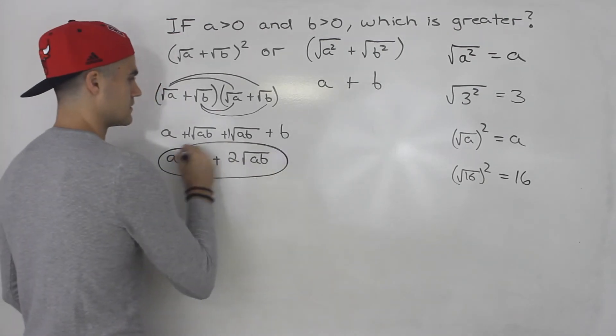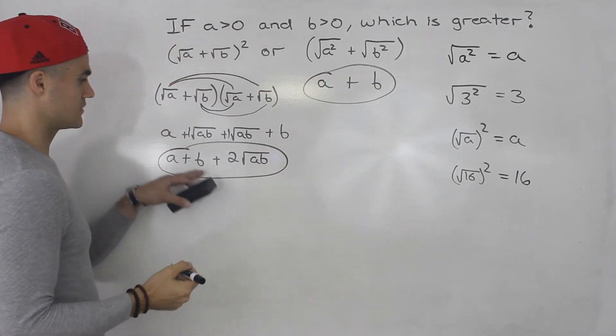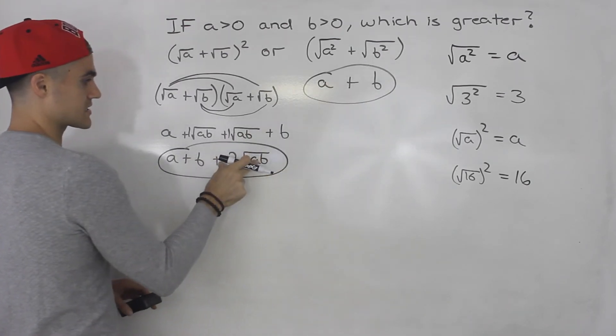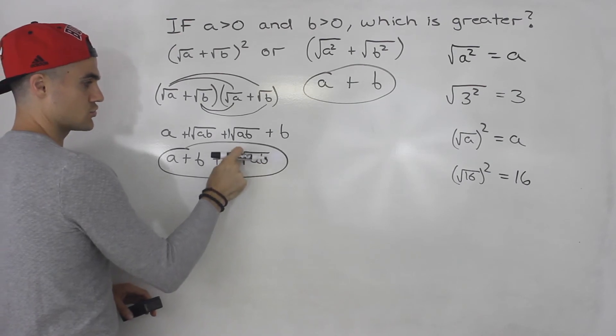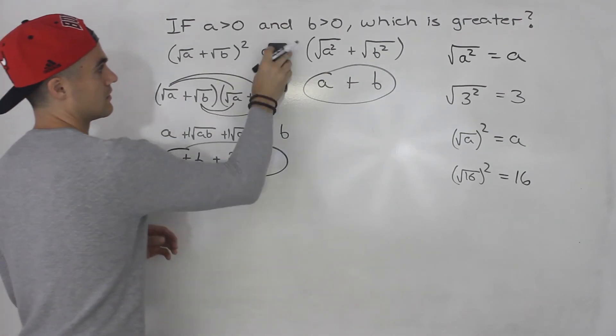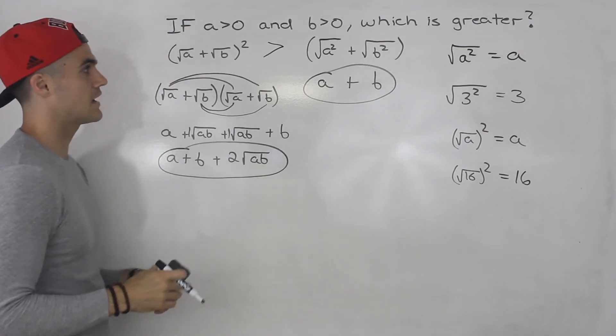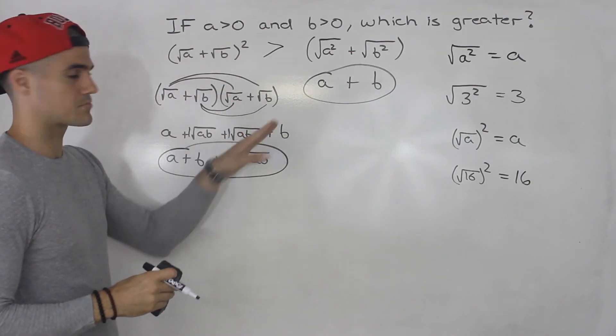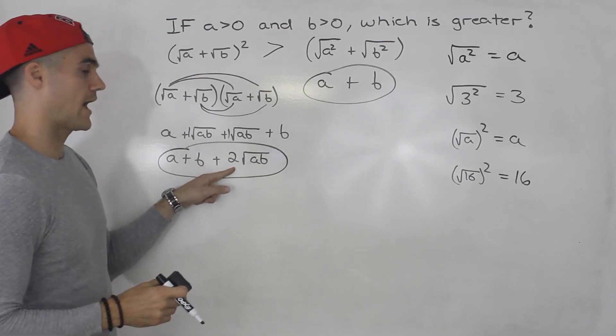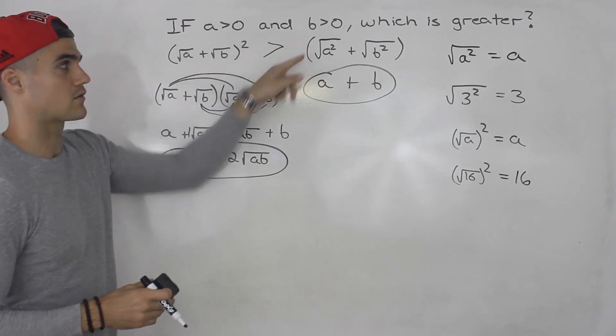So out of this and out of this, which one is greater? Well, obviously this one is greater because a plus b, a plus b, both of them contain that. But this expression contains an extra two root ab. So basically this here is greater than that. The way we did that was we simplified both expressions and we noticed both of them contain a plus b, but this one had extra, it had more. So we know that this here is greater than that.